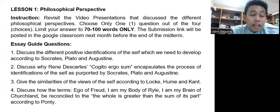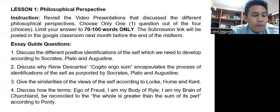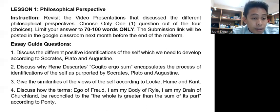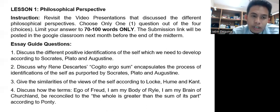And what are the guide questions? You are to choose only one out of these four questions. The first question: discuss the different positive identifications of the self which we need to develop according to Socrates, Plato, and Augustine.